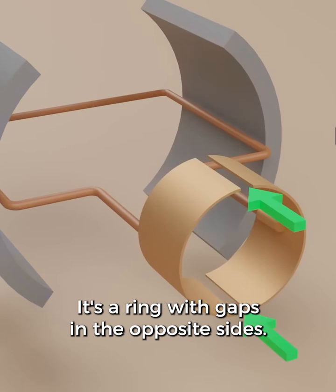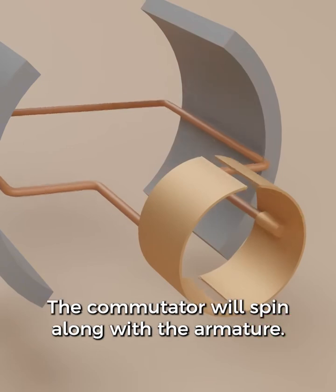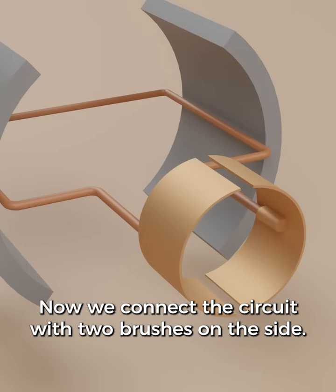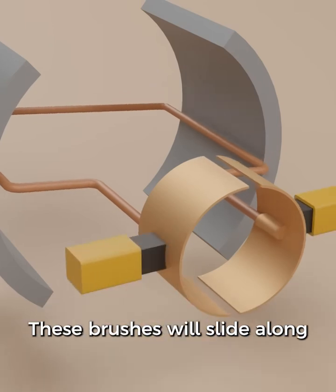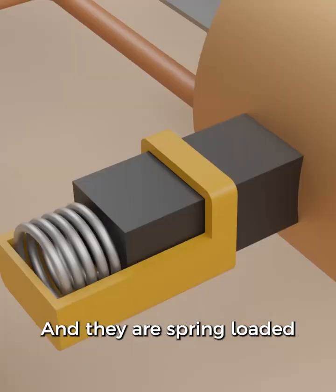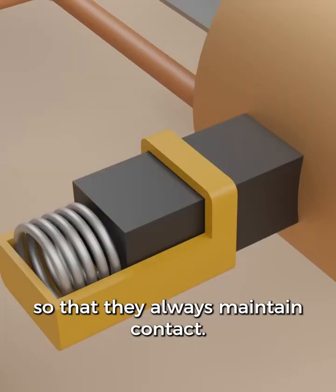We need to add something to the armature called a commutator. It's a ring with gaps on the opposite sides. The commutator will spin along with the armature. Now we connect the circuit with two brushes on the side. These brushes will slide along as the commutator spins and they are spring loaded so that they always maintain contact.